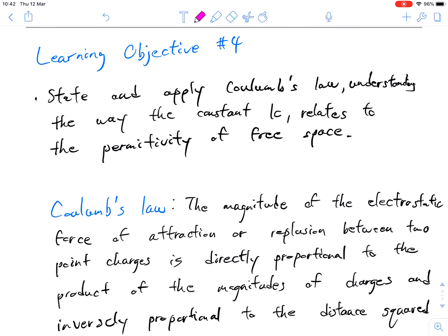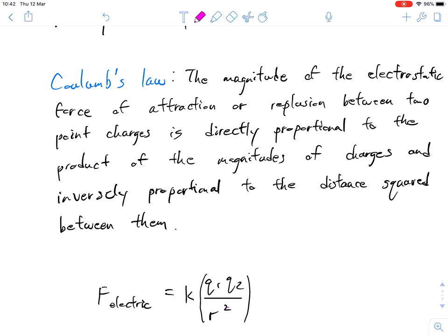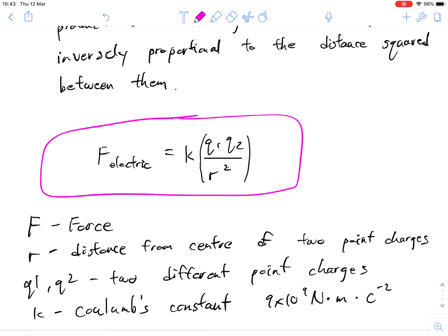Our fourth learning objective is to look at Coulomb's Law. We'll state and apply Coulomb's Law and also look at the k constant along with the permittivity of free space. So let's dig into the first part. This is Coulomb's Law. The magnitude of the electrostatic force of attraction or repulsion between two point charges is directly proportional to the product of the magnitudes of charges and inversely proportional to the distance squared between them. Wow, that's a really long sentence. So this is what it looks like in math. Oh, that looks so much more simple.